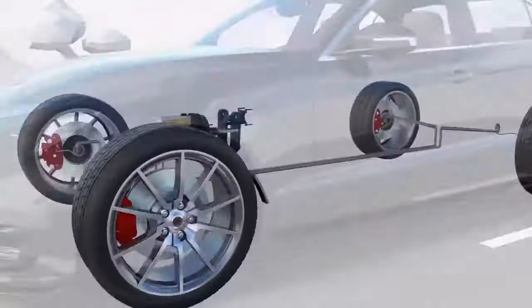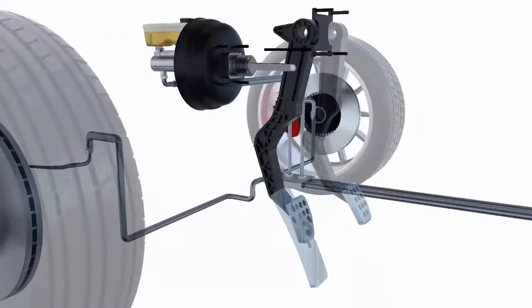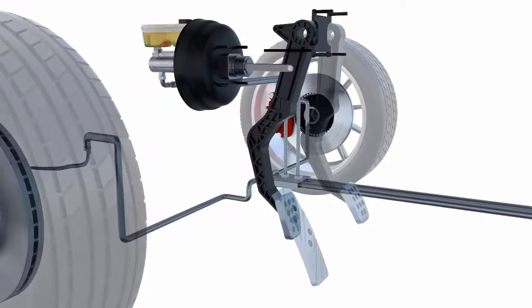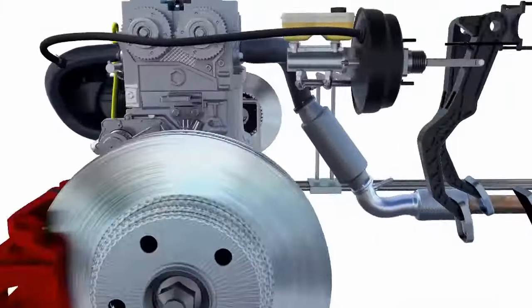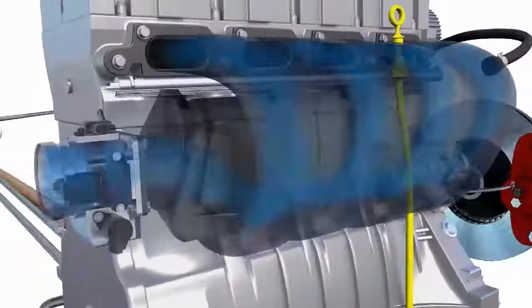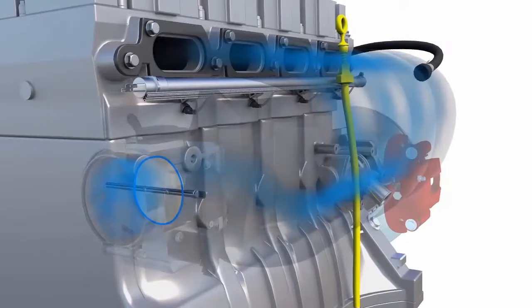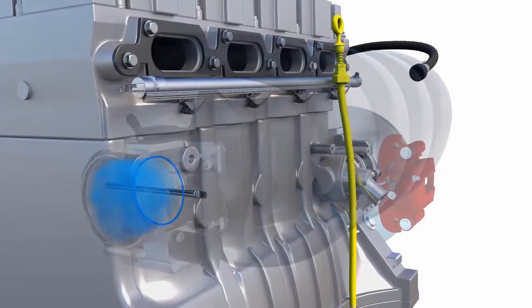Vacuum power is used on many vehicles for braking assistance and to operate engine controls and ventilation valves. This vacuum is normally created when air is sucked past the throttle plate into the intake manifold of the engine.